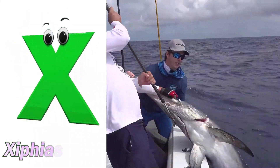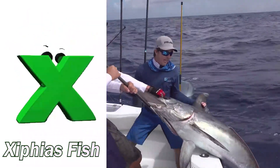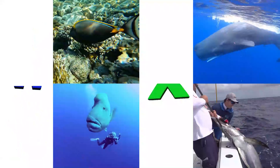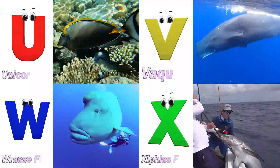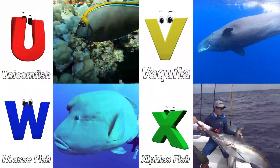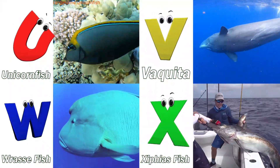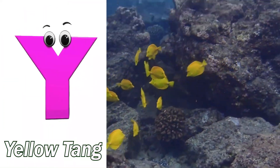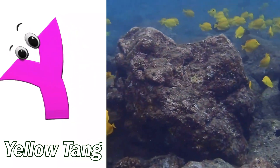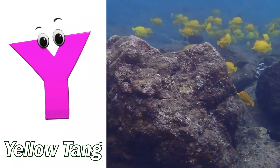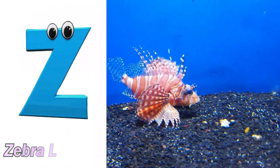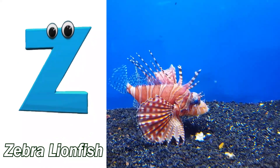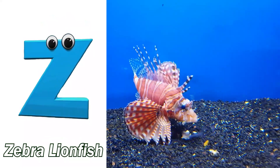X is for xiphias fish. Z, xiphias fish. Y is for yellow tang. Yuh, yellow tang. Z is for zebra lionfish. Z, zebra lionfish.